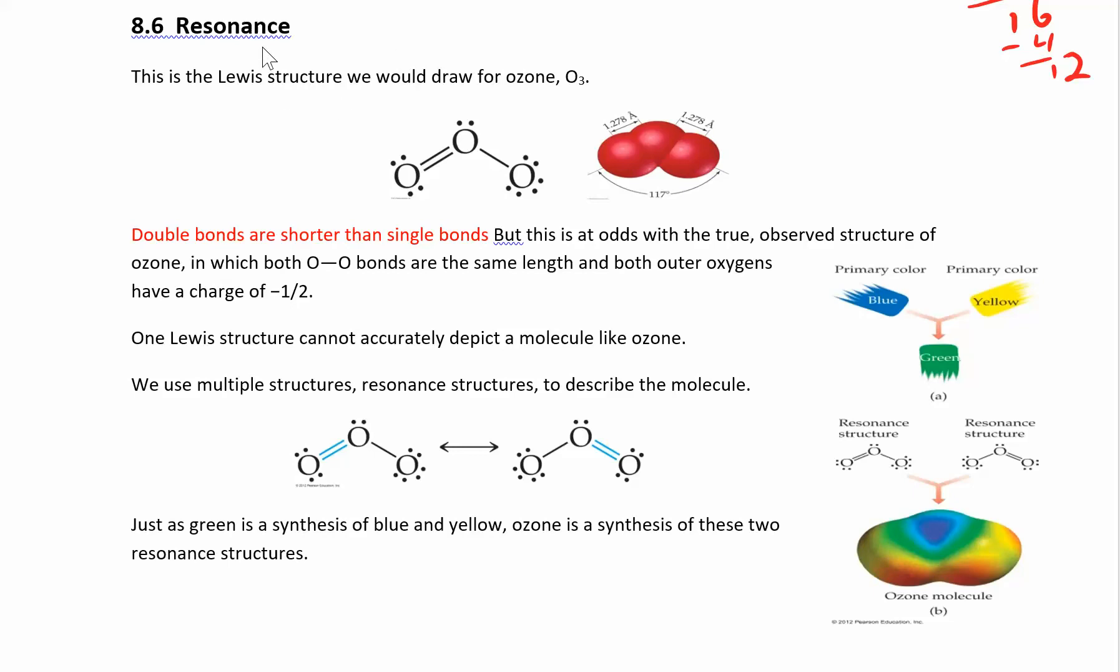Now we can consider some resonant structures. This happens when you have something like ozone. If you draw the Lewis structure of ozone, you get something like this. That's one structure you can draw, and then you could also have put the double bond on the other side. So you have these two different structures.